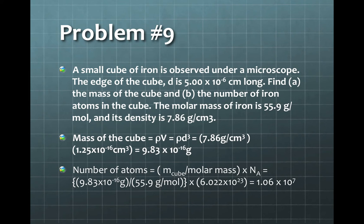The number of atoms is given by the ratio of the mass of the cube over the molar mass multiplied by Avogadro's number. From that, we get 1.06 times 10 to the 7 atoms.